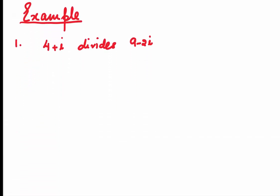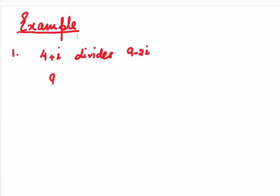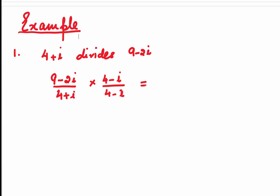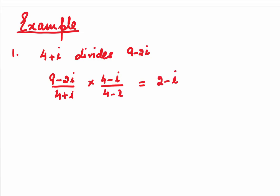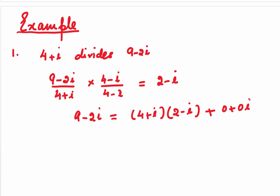In the first example, we are given 4 plus i divides 9 minus 2i. How do we write it as alpha equals beta gamma plus delta? Let's start by dividing 9 minus 2i by 4 plus i. When we rationalize by multiplying and dividing by 4 minus i, we get 2 minus i. This is the first case — as we have a delta of 0, we can write 9 minus 2i equals (4 plus i) times (2 minus i), and delta is 0 plus 0i.